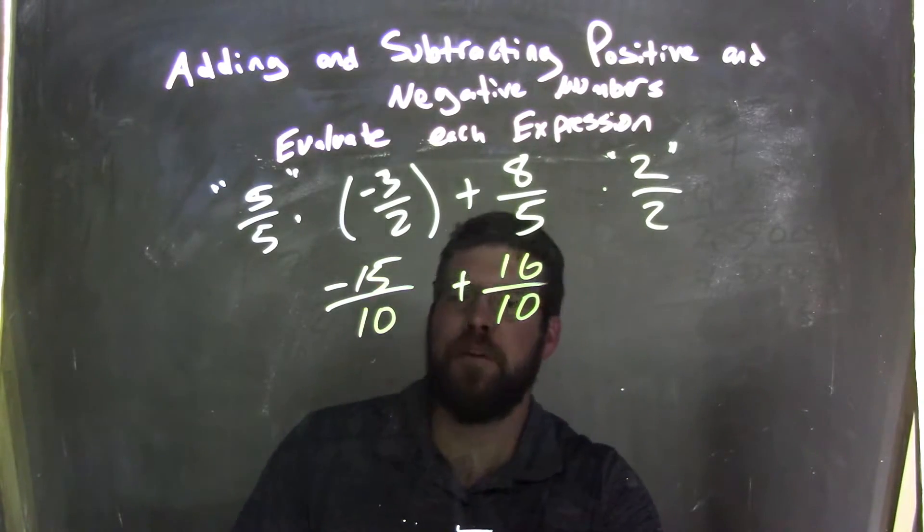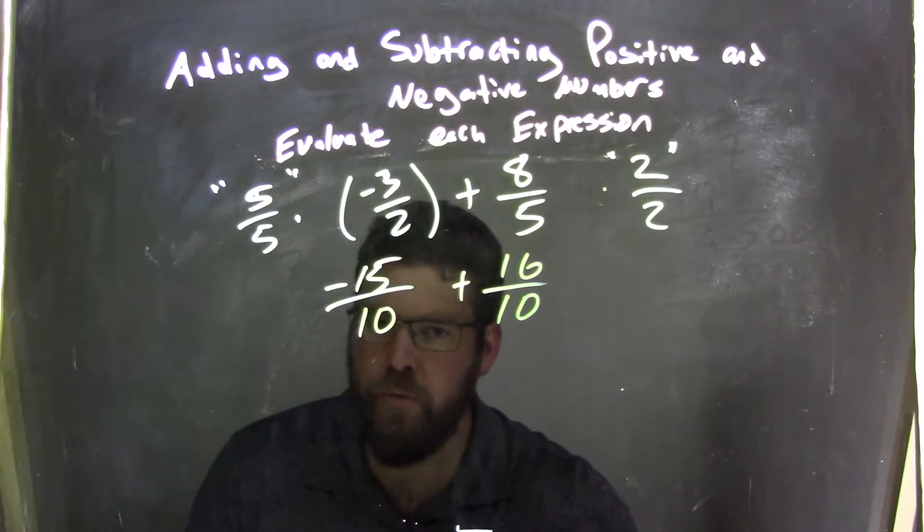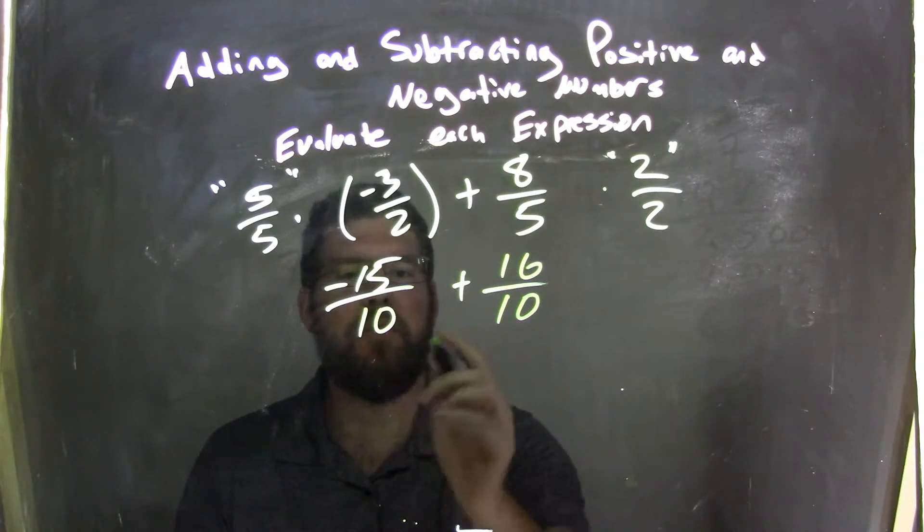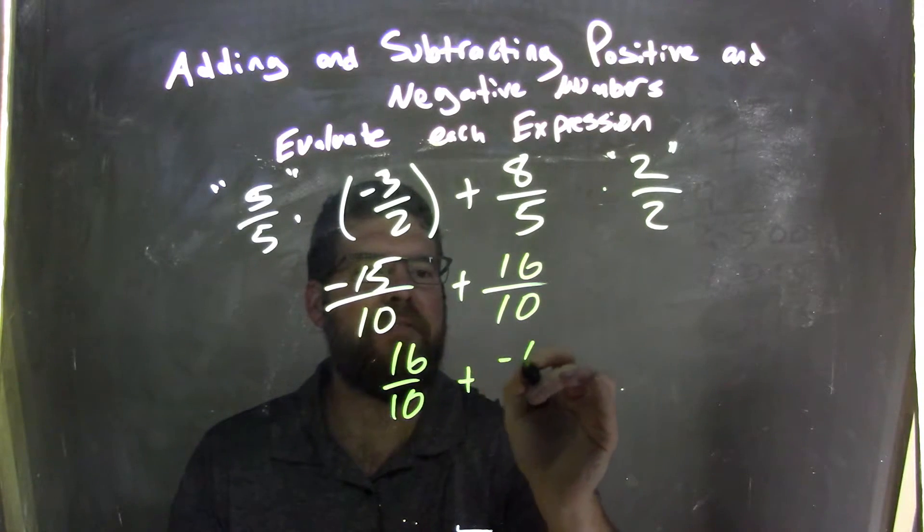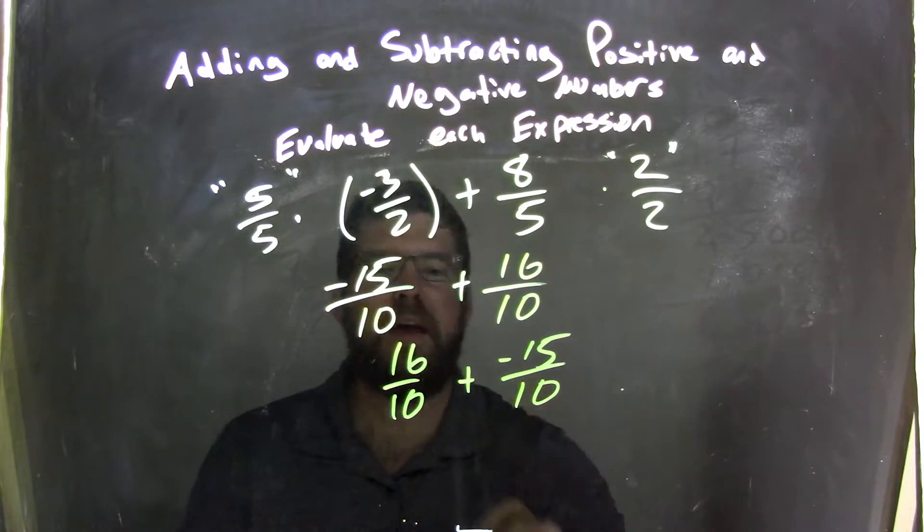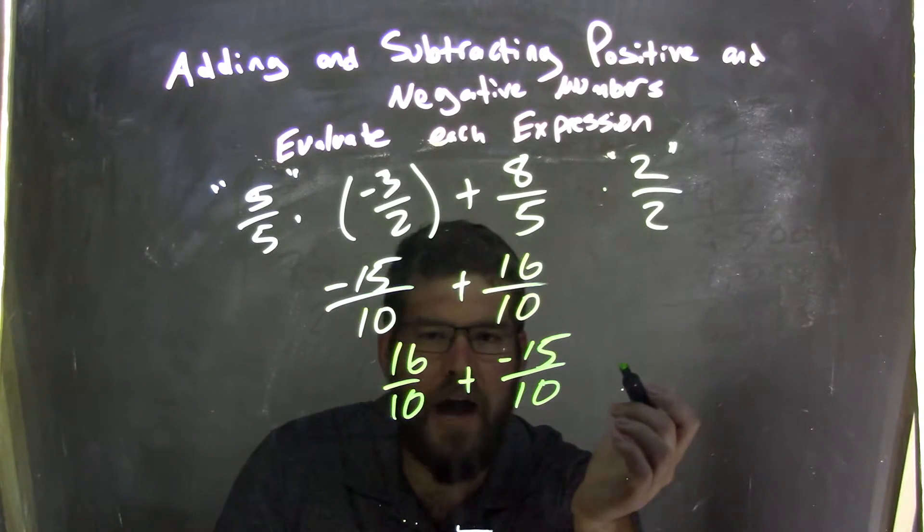So now we have negative fifteen over ten plus sixteen over ten. By the commutative property, since there is addition, I can rearrange this to be sixteen over ten plus a negative fifteen over ten, and we know that adding a negative is the same thing as subtraction.